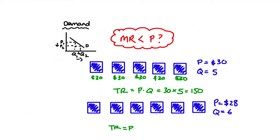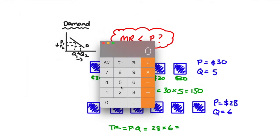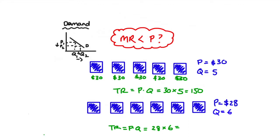Our total revenue is still the same formula: P times Q, but now it's 28 times six, which is 168. And just to be clear, each of the six boxes is being sold at $28.